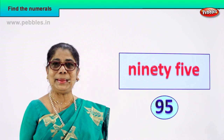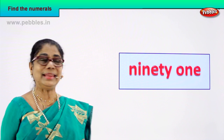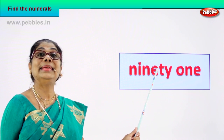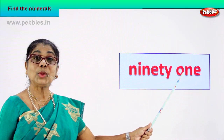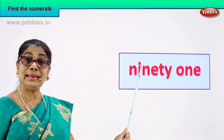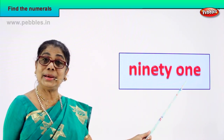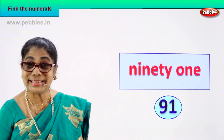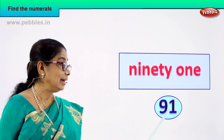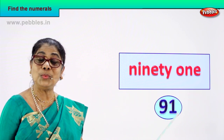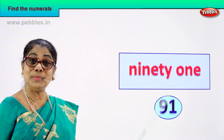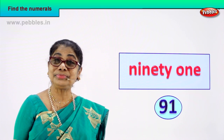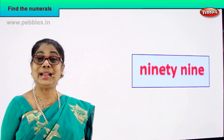Let's take another number name. Read: N-I-N-E-T-Y, 90, O-N-E, 1 — that's 91. That's the number name. What is the numeral? 91 can be written as 9 and 1, 91. Good — 9 and 1, 91. That's the numeral for this number name.